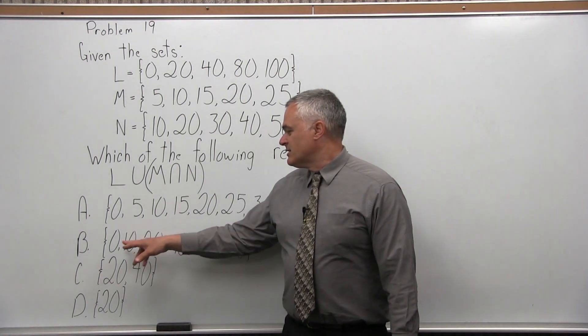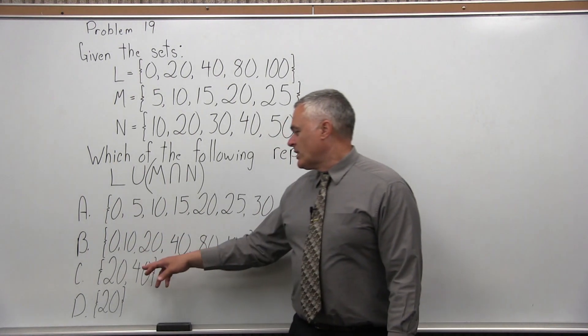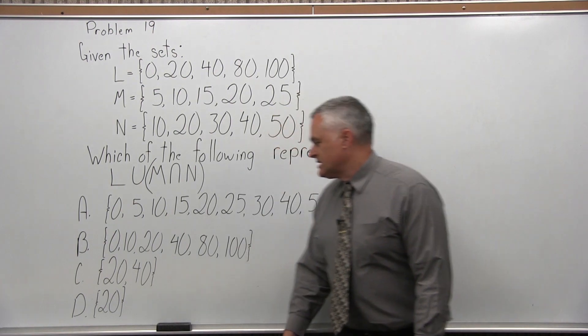Option B is the set 0, 10, 20, 40, 80, 100. Option C is the set 20, 40, and option D is the set with just 20.